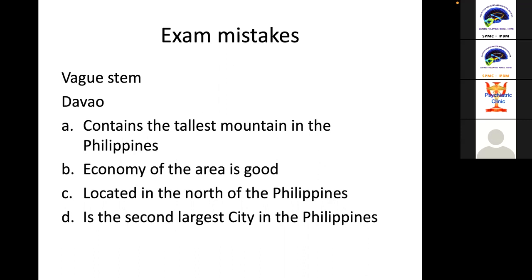If you notice, there are actually multiple correct alternatives. A — contains the tallest mountain — is correct; B — economy is good — is also correct; C and D are wrong. So if the learner doesn't know what to look for, they will be confused. Students might answer A or B. If the stem is vague, there are two correct answers, which is a problem.